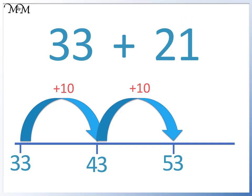We now add 1. We go from 53 to 54. 33 plus 21 equals 54. We had 2 tens, so 2 jumps of 10, and 1 jump of 1.